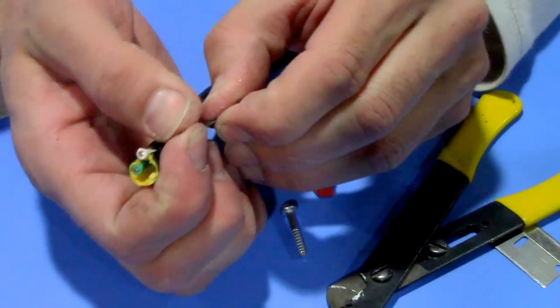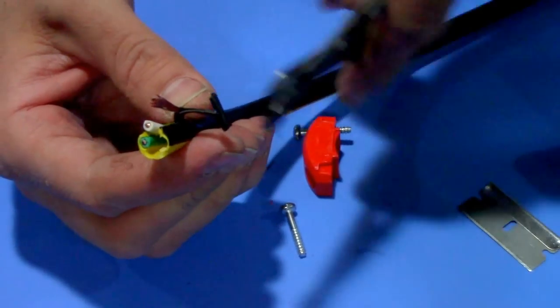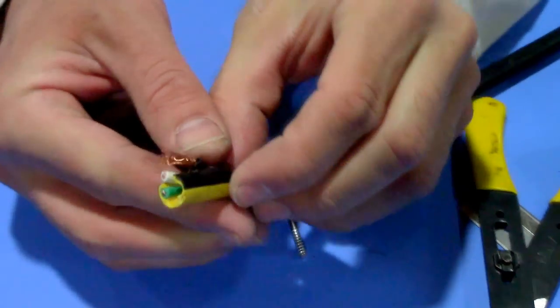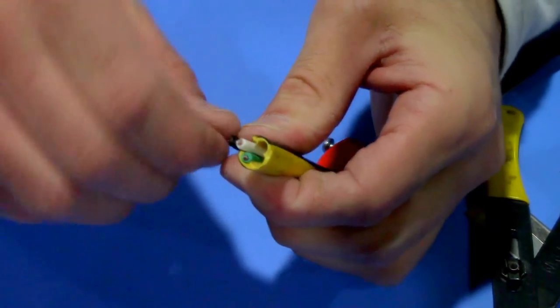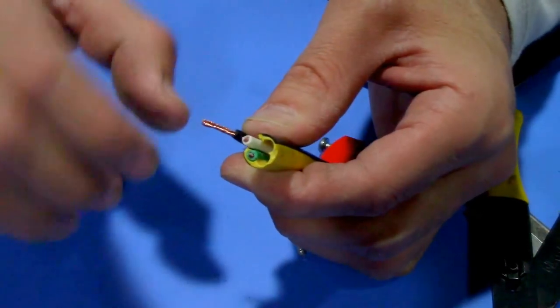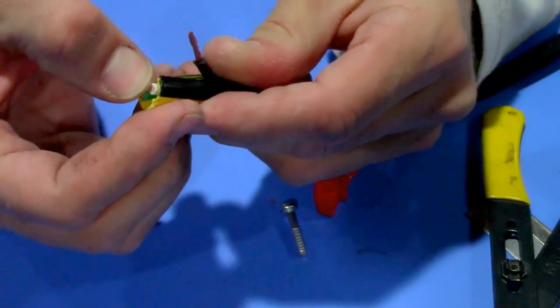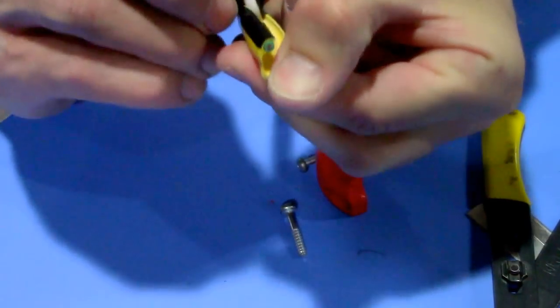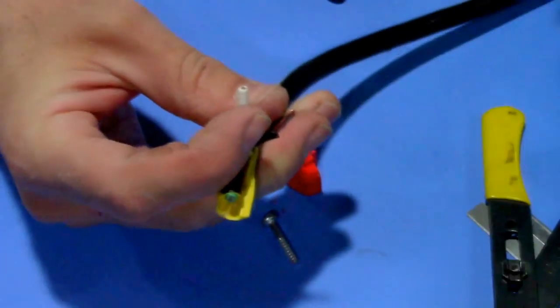These are some really cheap ones but they work okay. So I stripped that one. I'm going to twist the wires together so they're nice and clean, they're not frayed or anything. And I'll repeat that with the next two.